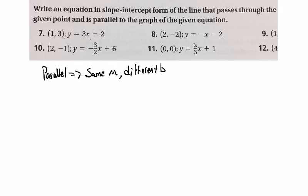So what we know is that in order for a line to be parallel, it has to have the same slope, but a different y-intercept. So what are we going to use as our slope? We're going to use 3 as our slope because it has to be the same as this equation here.